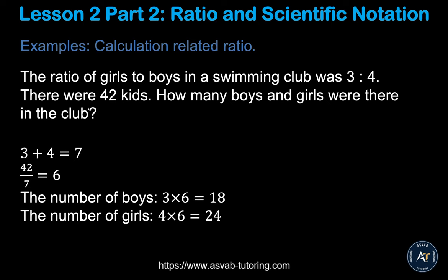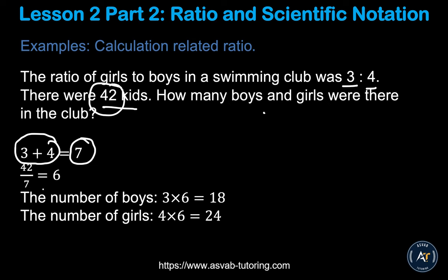Now let's apply ratio knowledge to a real problem. The ratio of girls to boys in a swimming club was 3 ratio 4, and there were 42 kids total. How many boys and girls were there? When you have a ratio, the first step is to add all the ratio values together. Adding 3 and 4 gives you 7.